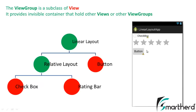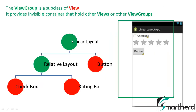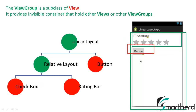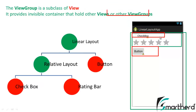I'm going to explain this hierarchical chart with the help of my application. First, this whole page is actually a LinearLayout. Within the LinearLayout we have a RelativeLayout, which is a ViewGroup, and a Button, which is a View. The green one contains the Checkbox and the RatingBar — it's a ViewGroup inside another ViewGroup, the LinearLayout. Inside the RelativeLayout we have both a Checkbox and a RatingBar. Hope this makes the concept crystal clear.